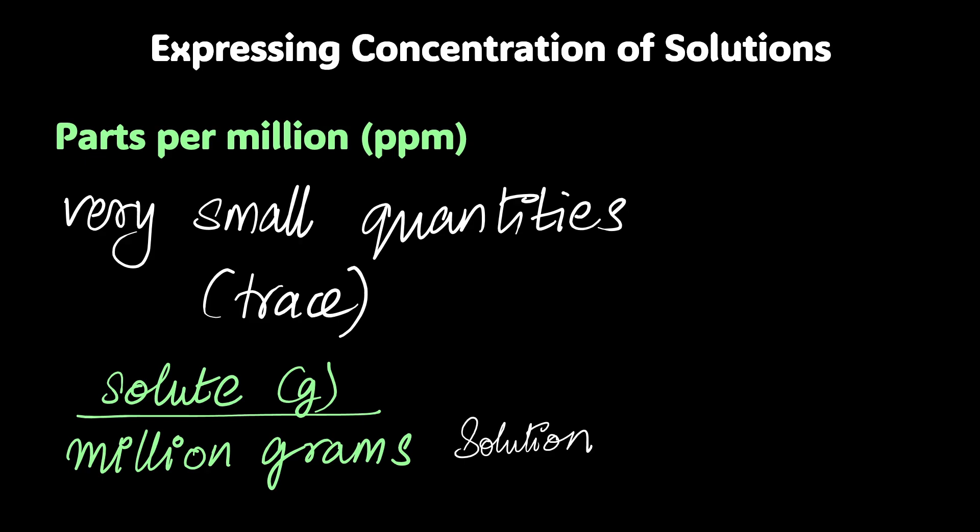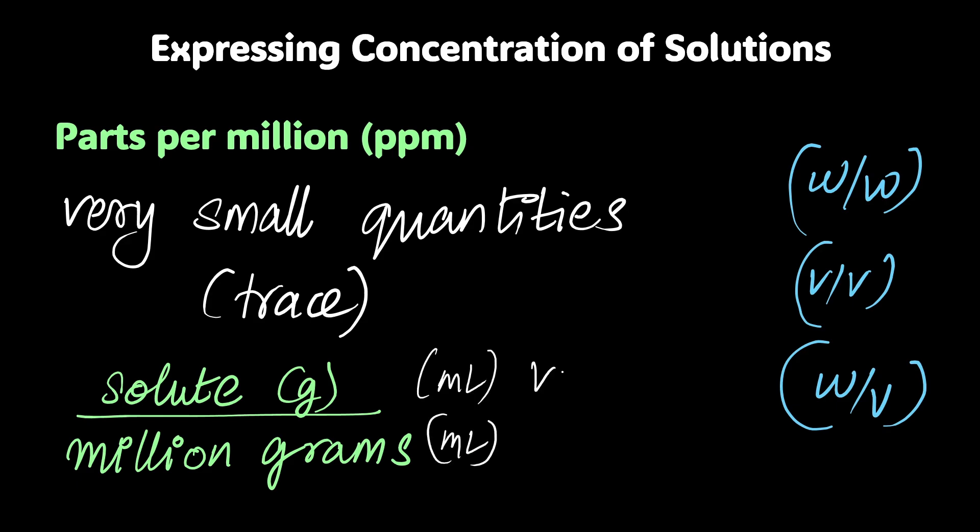But why grams? Does it have to be grams? Can it be ml? Can it be something else? If you're thinking that, you're on track. Have you checked out the part one of this video? Where we talk about weight by weight percentage, volume by volume percentage, and weight by volume percentage? You could do this same exercise and change gram to, say, ml, which would then make it v by v. Or I could also make it something else, which is this term right here, w by v. So all of it figures. So I can do parts per million in all of these three terms.